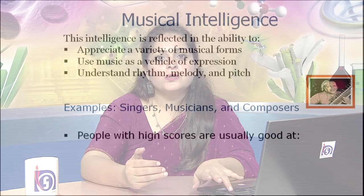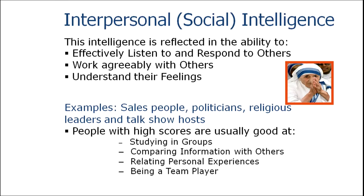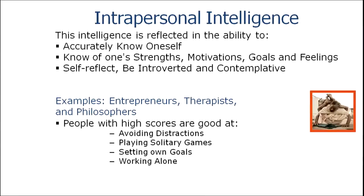The sixth type is interpersonal or social intelligence — the ability to listen effectively and respond to others, work in groups, and understand others' feelings. Salespeople, politicians, religious leaders, and talk show hosts generally excel in interpersonal intelligence. The seventh type is intrapersonal intelligence — knowing yourself: your strengths, motivations, goals, and feelings. This is generally reflected in entrepreneurs, therapists, and philosophers.